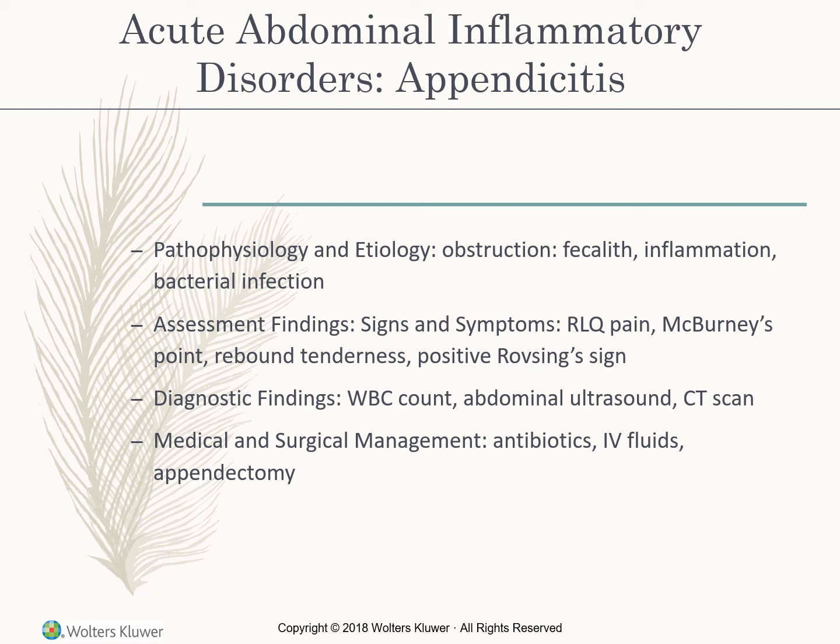Assessment findings include right lower quadrant pain at McBurney's point — between the umbilicus and right iliac crest — where the patient exhibits rebound tenderness. A positive Rovsing's sign occurs when palpating the left lower quadrant causes severe pain in the right lower quadrant. Lab tests include WBC count, abdominal ultrasound, and CT scan.